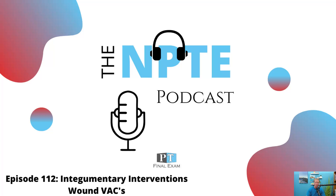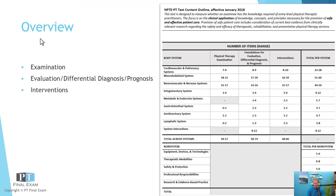Today we'll be going through a practice question related to the integumentary system. This is one of the larger systems among the other systems. The big three contain about 75% of the test, and the other systems include integumentary, metabolic endocrine, gastrointestinal, genital urinary, lymphatic, system interactions, and the non-systems. Each of these is only a much smaller representation on the test, so be sure to study proportionately — spend the most time on the big systems, and a proportionate amount of time on the smaller ones. Don't forget about them, but don't over-worry about them either.